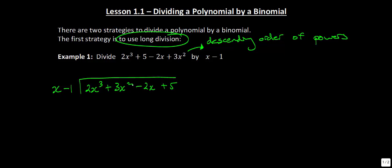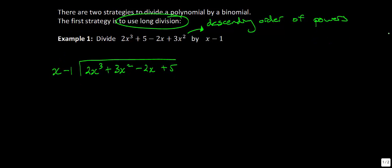Notice how it goes cubed, squared, x, and then the constant term. So what we do here with long division is we think: what do you multiply x by in order to get 2x cubed? We're going to multiply x by 2x squared. 2x squared times x gives you 2x cubed, and 2x squared times negative 1 gives you negative 2x squared. You can see the parallels between regular long division and doing long division with polynomials.